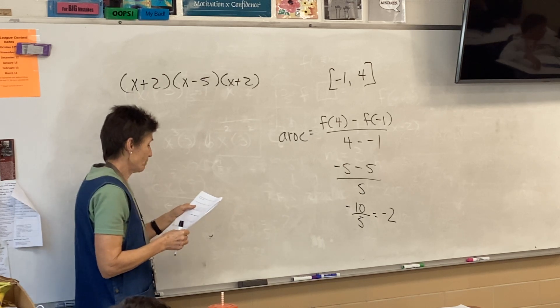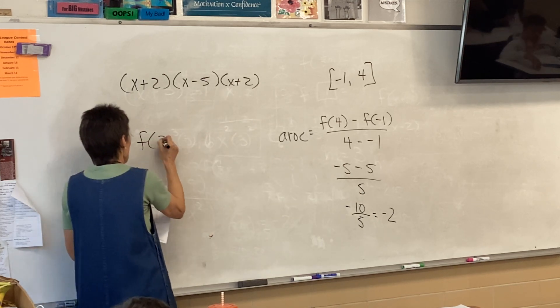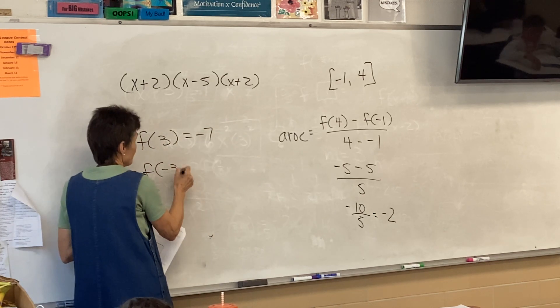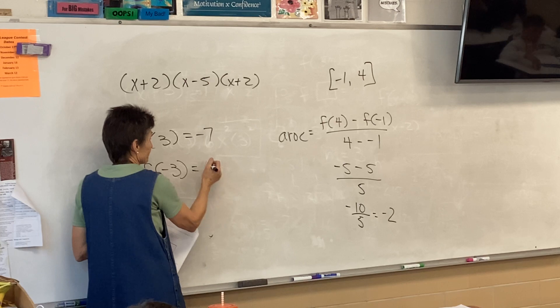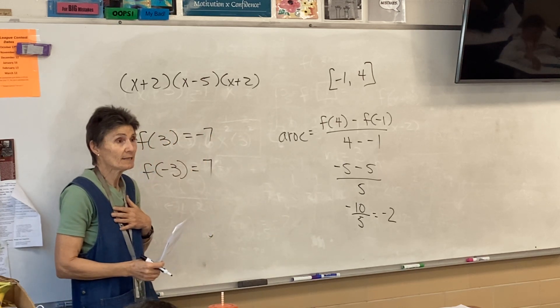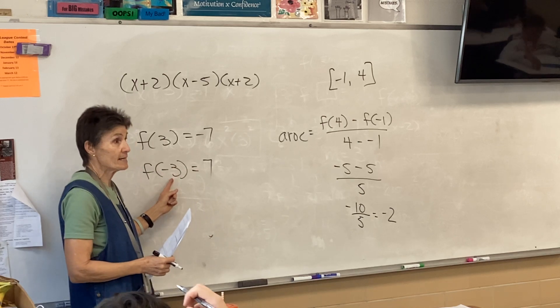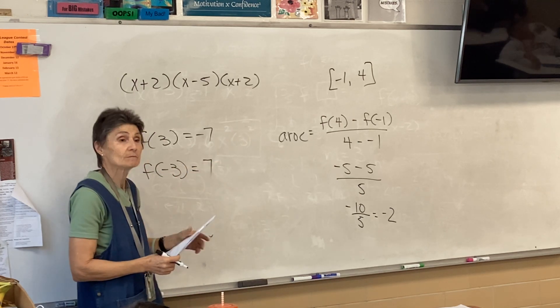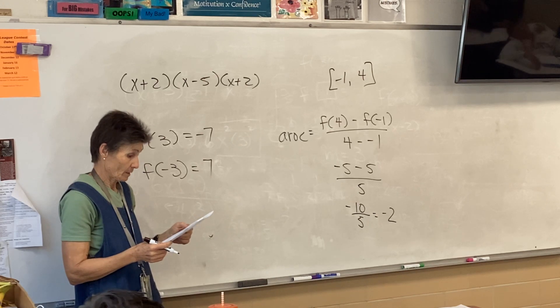So, the polynomial function is an odd function, f of three is negative seven. So, what's f of negative three? Positive seven. Because what happens when you're odd? When you're odd, change the sign on the input, we'll change the sign on the output. Okay, we did F already.